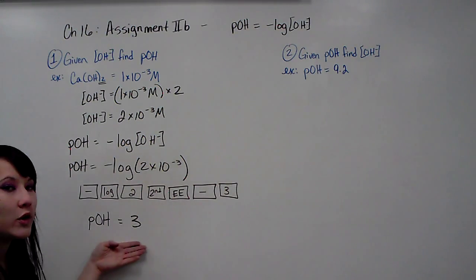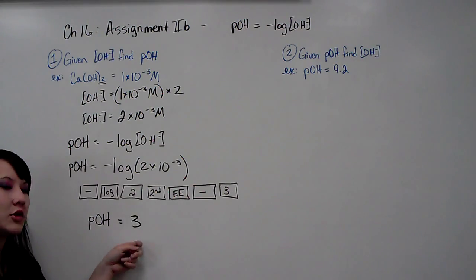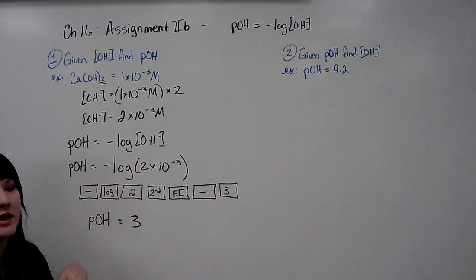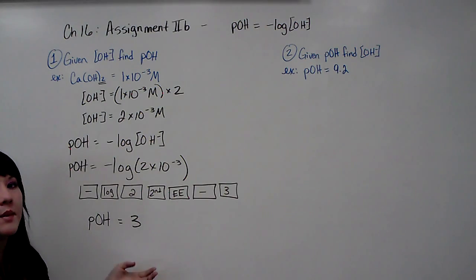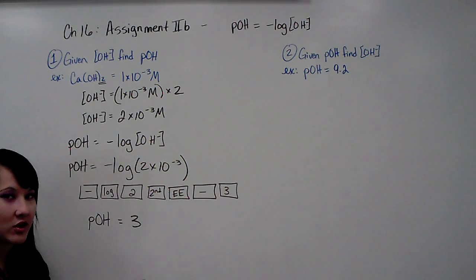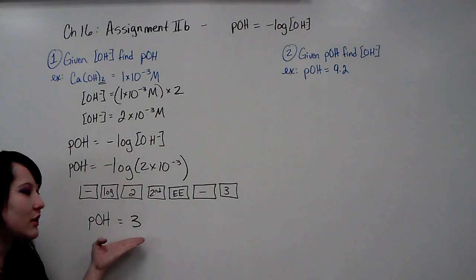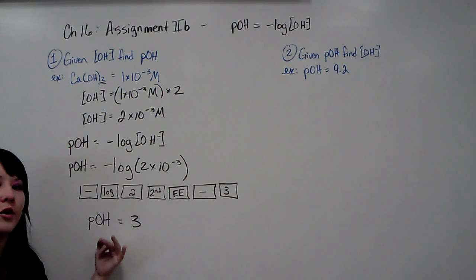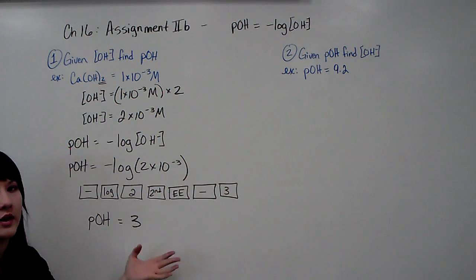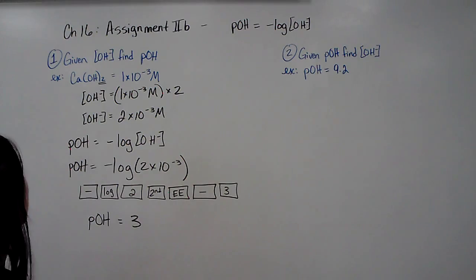Now, while you want to think that this POH is 3, so that must make it acidic because an acid is between 1 and 7, but that's the pH scale. This is POH. So you can't use this number to decide if it's an acid or base. You have to convert it to pH, which we will show you in the next segment.